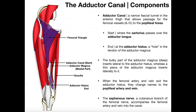Up here at the very top, here's our inguinal ligament connecting the pubic tubercle to the anterior superior iliac spine. We know here's our femoral triangle — it descends down and then goes back up to the pubic tubercle. The femoral triangle is shown in dark purple. Right here, where the sartorius muscle crosses over the adductor longus muscle, this is the start of the adductor canal. The start of it is where the sartorius muscle passes over the adductor longus, which also happens to be pretty much where the femoral triangle ends inferiorly. So the adductor canal is really just a continuation of the inferior part of the femoral triangle for the passage of those vessels downward.